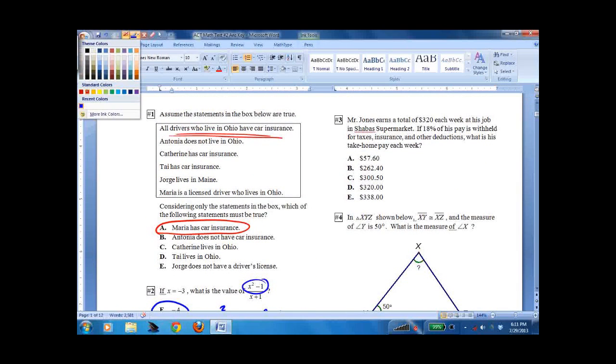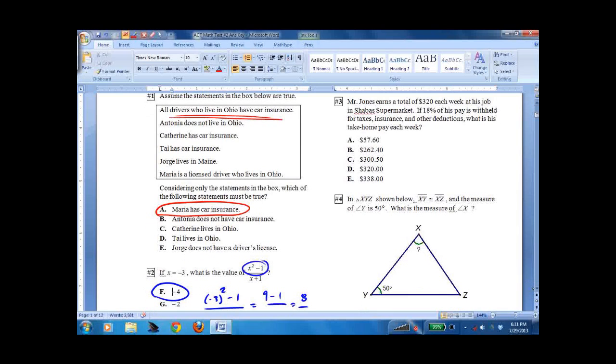Number 3, Mr. Jones earns 320 each week at his job. If 18% of his pay is withheld for taxes, what is his take-home pay? So he keeps 82% of his money because 82 plus 18 equals 100. So you just multiply that times 320, and it will give you the answer of 262.4 B.